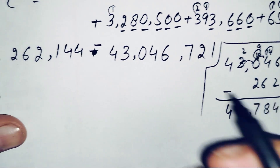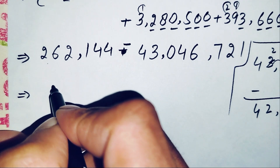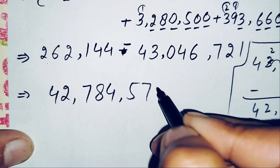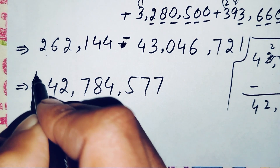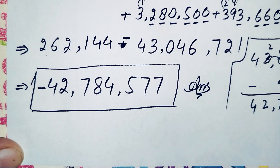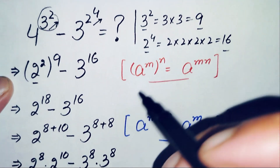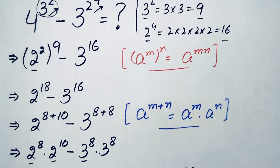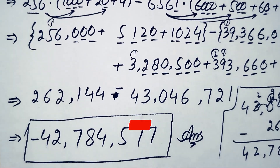We attach a negative sign to the answer because the subtraction is reversed. So the final answer is negative 42,784,577. This is our answer to this nice and interesting exponent simplification problem. If you like this video, please subscribe to my YouTube channel for more interesting step-by-step math videos. Thanks for watching.